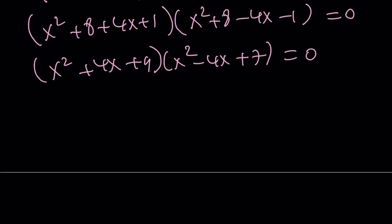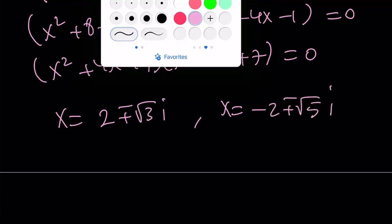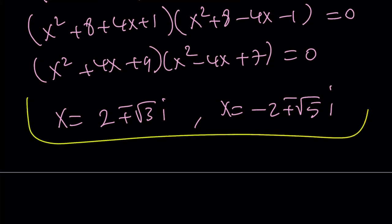By setting each of these equal to 0, we get the solutions as before. And x values are going to be 2 plus minus root 3i. And x equals negative 2 plus minus root 5i. And this brings us to the end of this video.